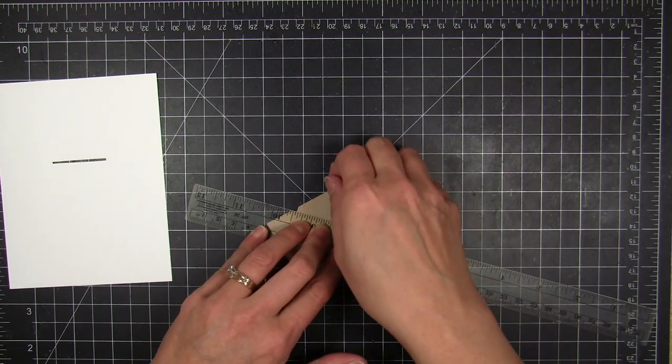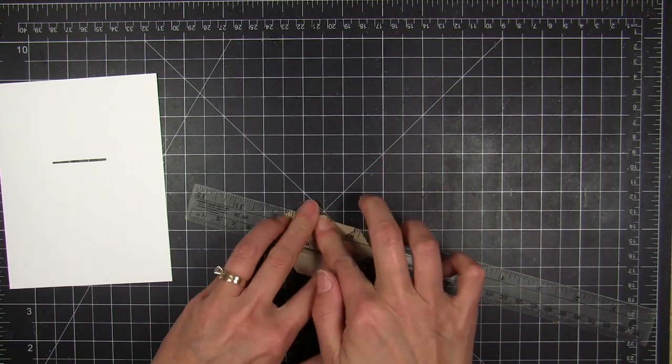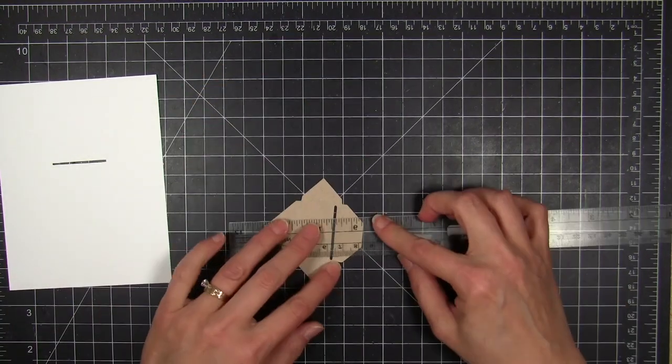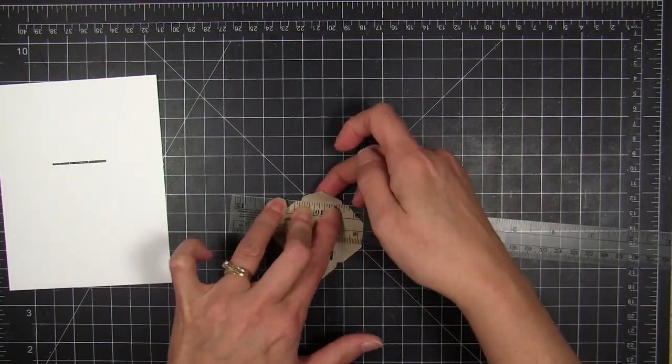So the straight edge of a ruler is just going to help me make sure that I'm creasing that fold line there where it needs to go.